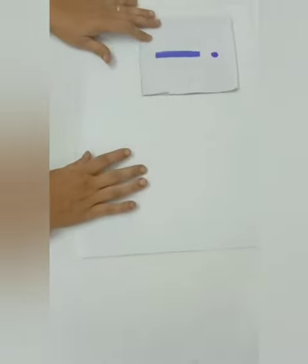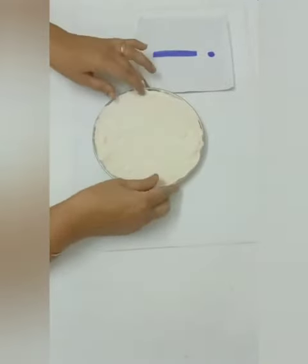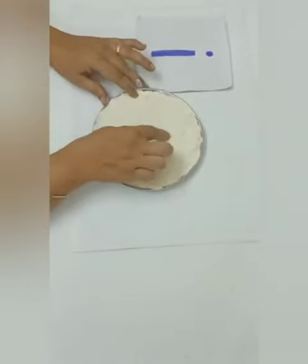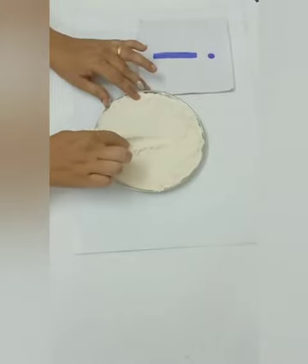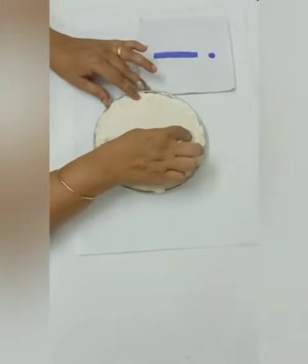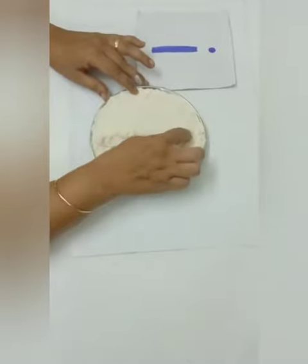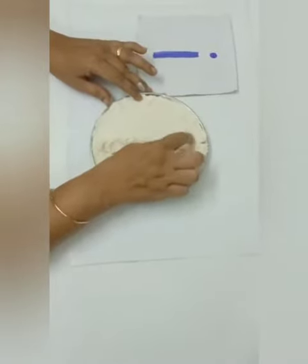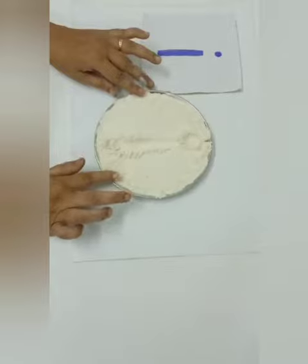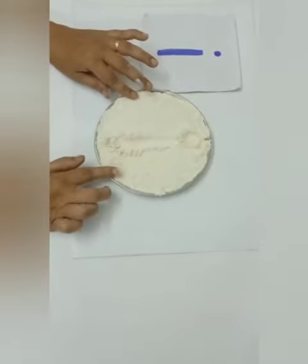Our first strategy is how to write E with flour. Make a standing line and put a small dot on it. You can also use semolina, salt, or sand.